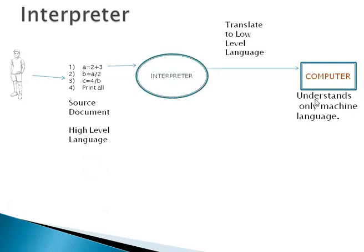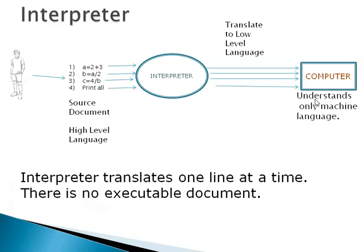Now the situation with interpreter is that it takes one line at a time. That is, it takes a=2+3, finds out what is the equivalent machine language sentence, gives it to the computer, then takes the second sentence, gives it to the computer, third sentence, fourth sentence, and so on and so forth. That is, interpreter translates one line at a time. There is no executable document. This is the second type of translator.